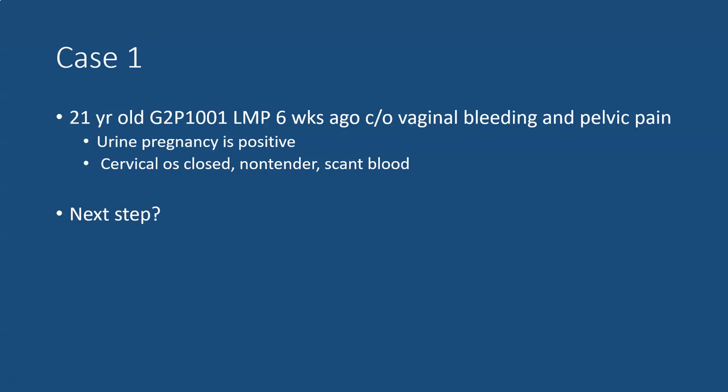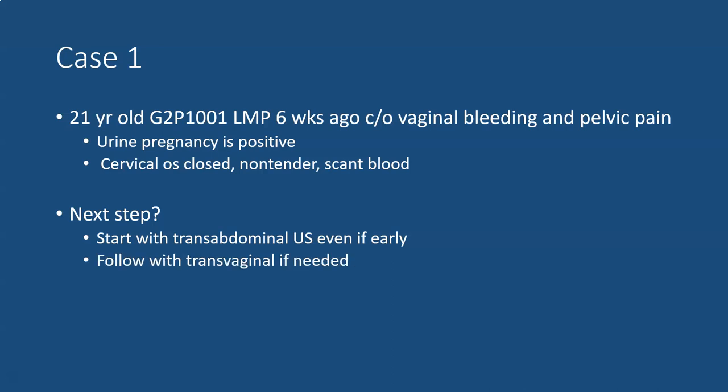Case number one: a 21-year-old G2P1001, last period six weeks ago, complaining of pain and bleeding. Her pregnancy test is positive. Her exam has a closed os, is fairly non-tender with a scant amount of blood in the vault. I would start with transabdominal even though it seems early in pregnancy — it gives you a better overall view, and it helps ensure that the bladder is empty when you do your transvaginal scanning. So I'll start with transabdominal and follow with transvaginal if needed.